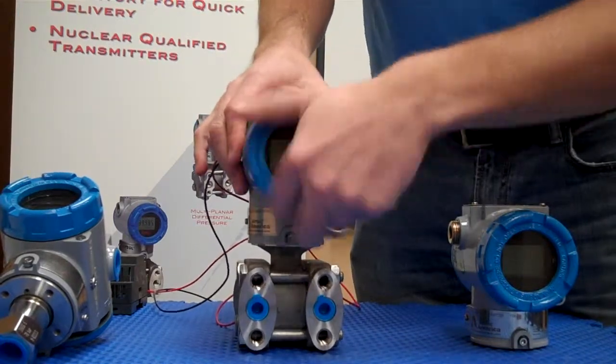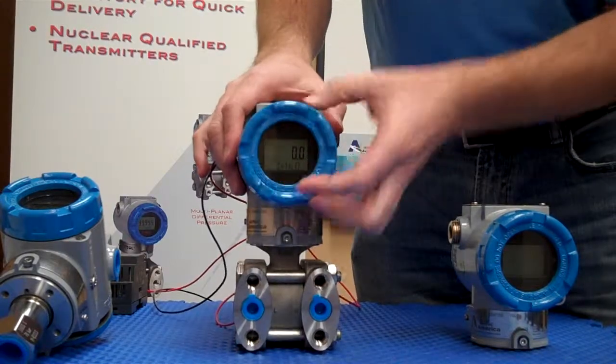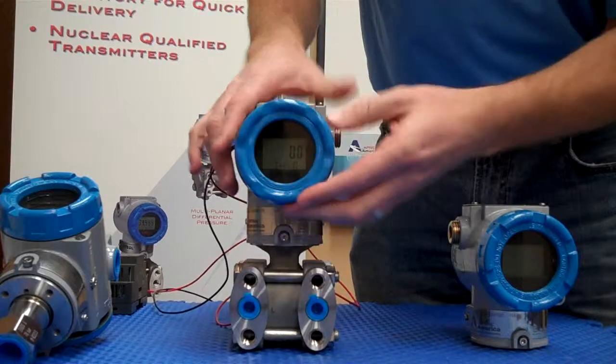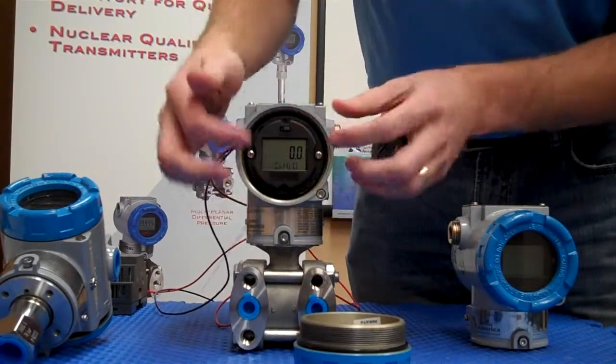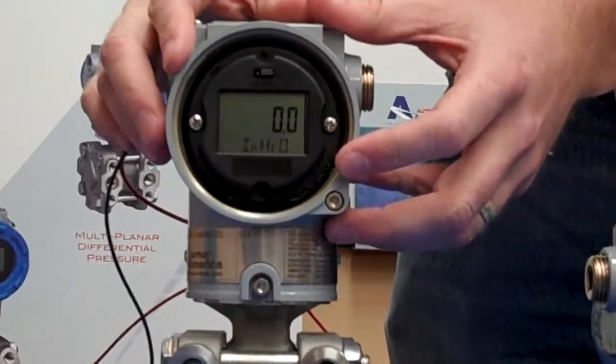As we unscrew the cover, you can see the indicating LCD. The LCD is rotatable - we can undo these screws and rotate it around. We also have the ability to change the fail position to high or low by moving this jumper.